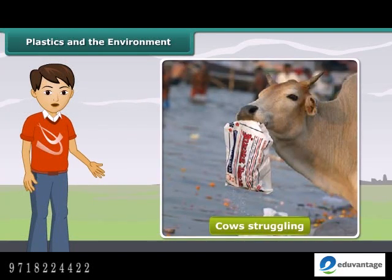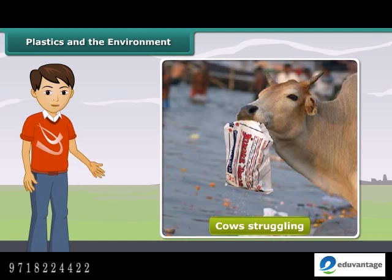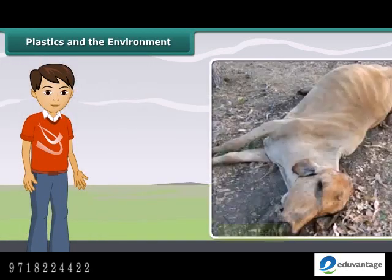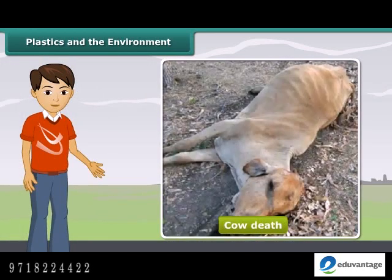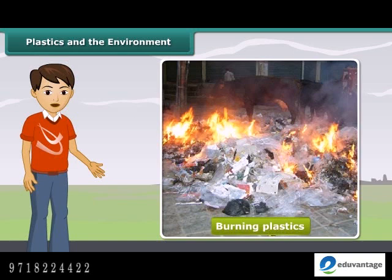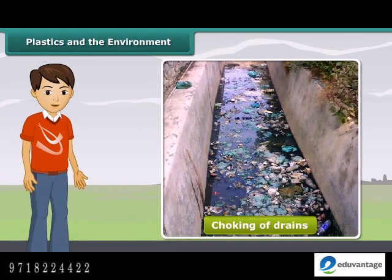Cows often struggle to take out food from plastic bags thrown near garbage heaps and end up eating the plastic bags as well. It can choke their respiratory tract or form a lining in their stomachs, causing their death. On burning plastics, toxic fumes are released into the atmosphere. Another plastic menace is the choking of drains, which leads to their overflowing and flooding during the rains.